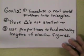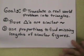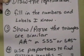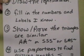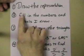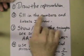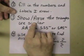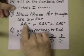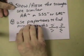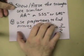I wrote them in that order because we're basically going to follow this pattern for solving many problems using geometry. Here is kind of a flow. We're going to draw the representation, fill in the numbers and labels that we know, show and prove the triangles are similar using either angle-angle, side-side-side, or side-angle-side, and then use proportions to find some missing links.